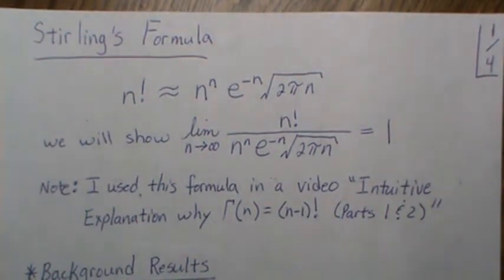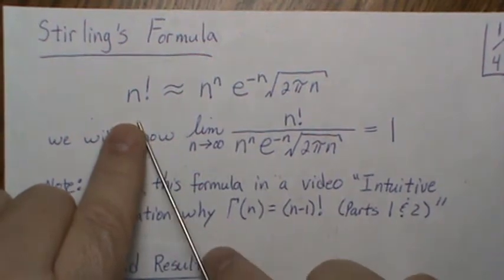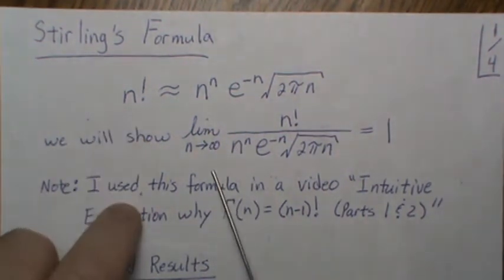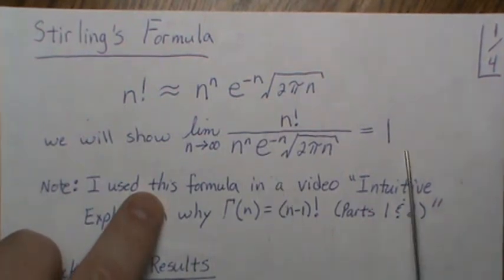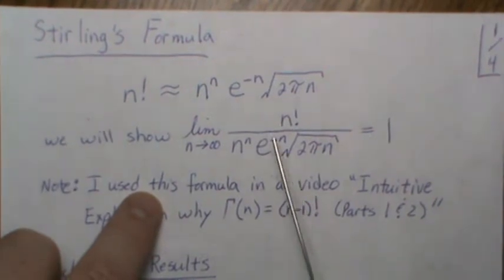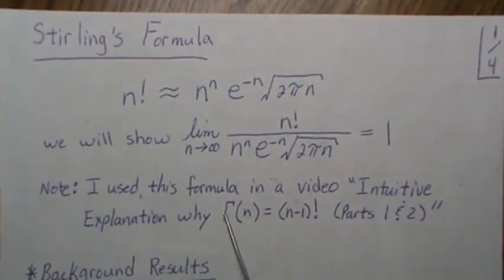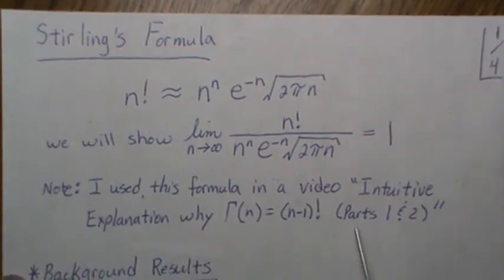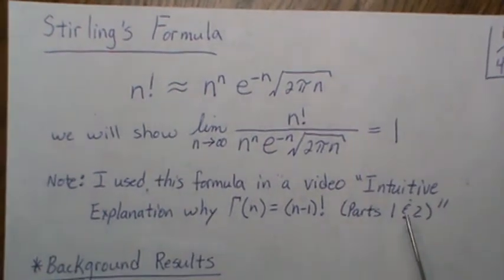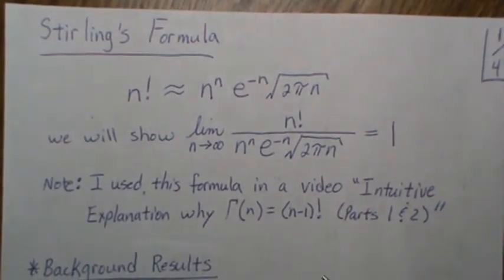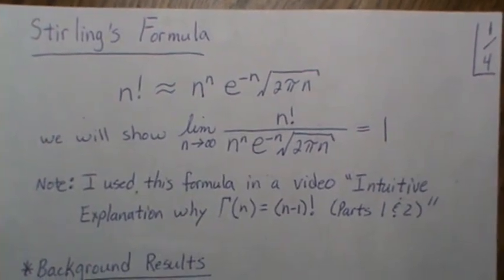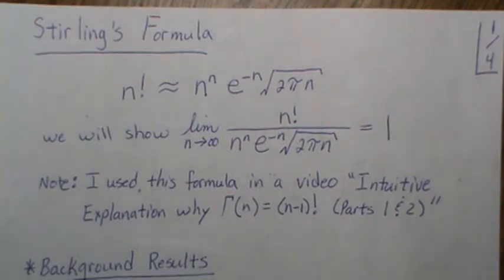In this video we prove Stirling's formula, which provides an approximation to the n factorial value. To show that the two are approximately equal, we'll show that their ratio converges to one. One note: I use this formula in a video giving an intuitive explanation of why gamma of n equals n factorial. To keep this very understandable, we prove seven different little parts and then put them all together to make the result easy to understand.